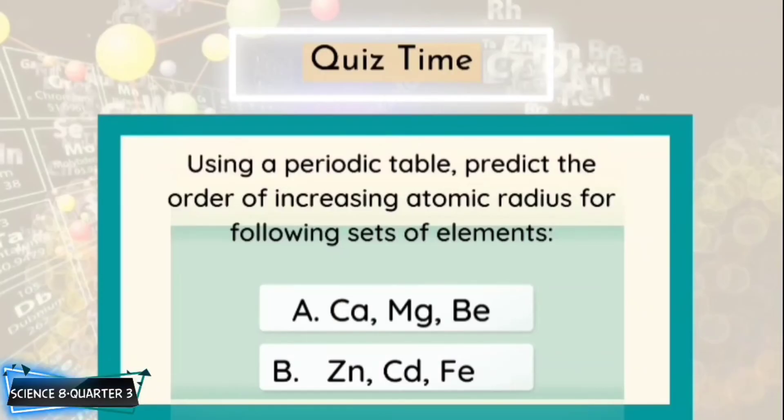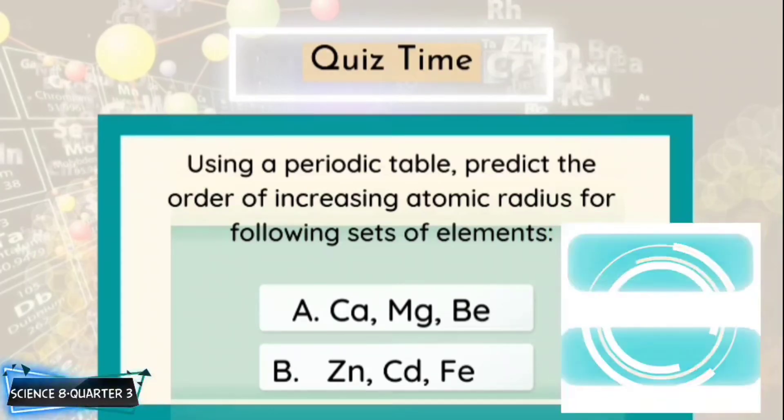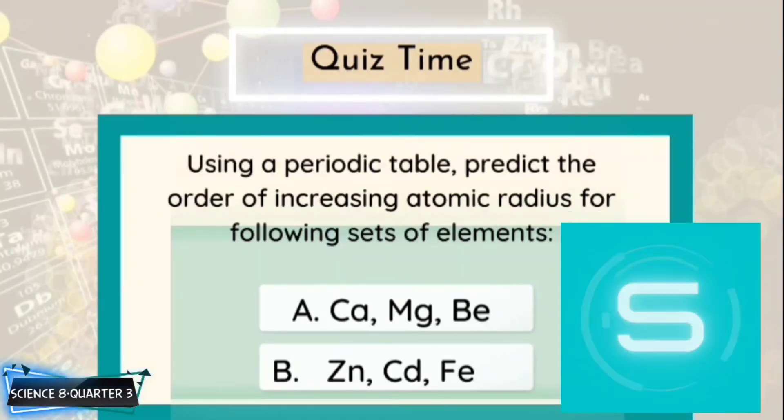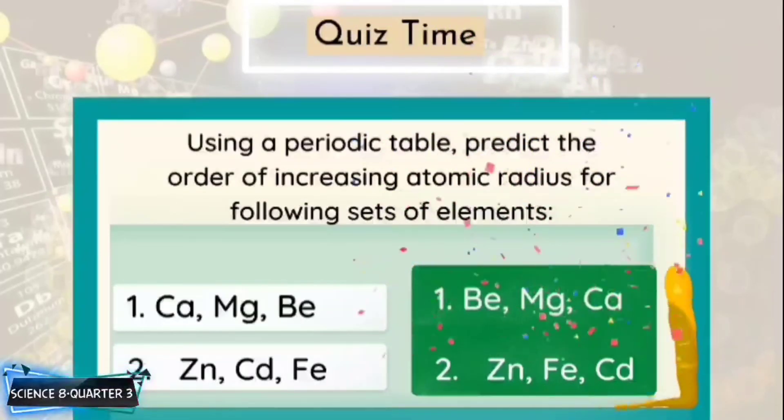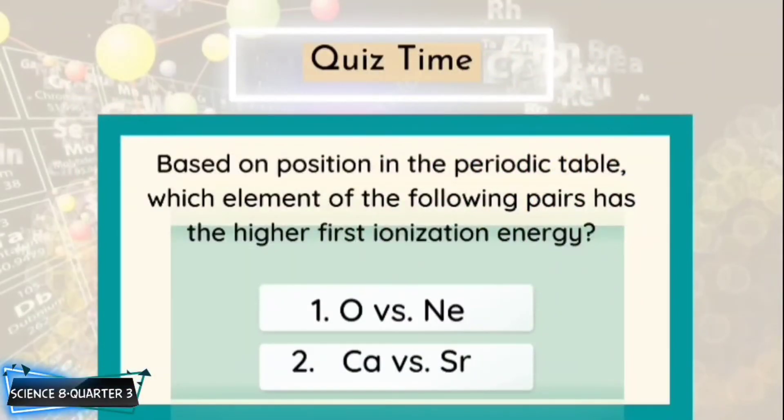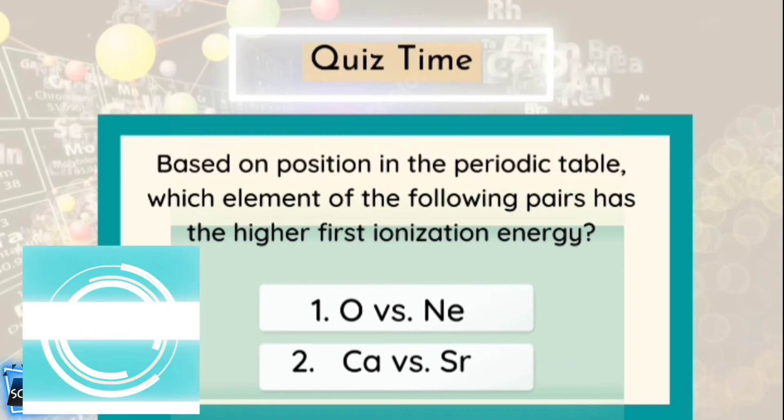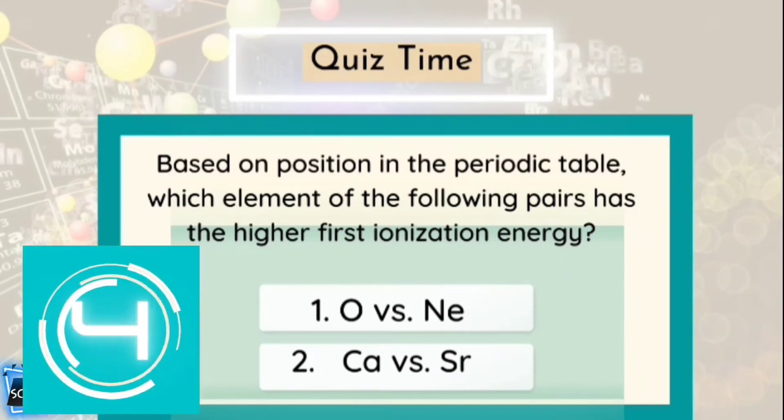The next learning task is to arrange the chemical elements according to the specified periodic test. Task 1: Using a periodic table predict the order of increasing atomic radius for the following set of elements. The answer is correct. Task 2: Based on position in the periodic table, which element of the following pairs has the higher first ionization energy? Great job learners!